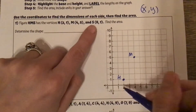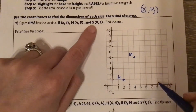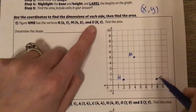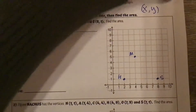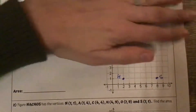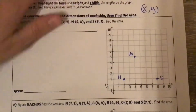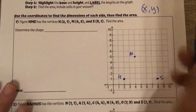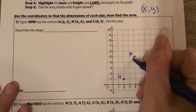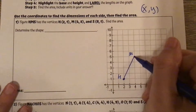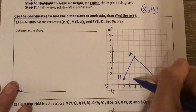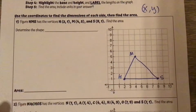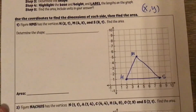And then S is at eight, one — so eight to the right, one up. That is S. I'm going to connect these points in the order that I plotted them. The shape that we have is a three-sided triangle.